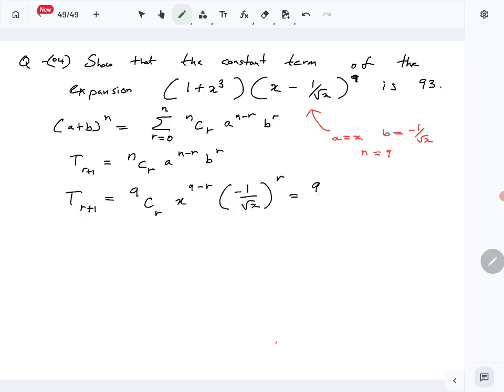Then let's simplify this. 9CR, X to the 9 minus R, minus 1 to R, square root X means X to the half, so X to the half R. Then again, let's simplify this, so 9CR, let's bring the minus 1 to the R to the front, minus 1 to the R, then X to the 9 minus R minus half R, so minus 3 halves R. So that is the general term of this expansion.